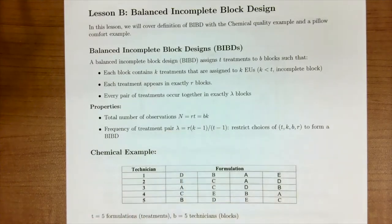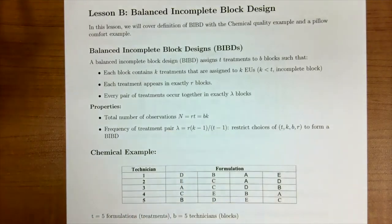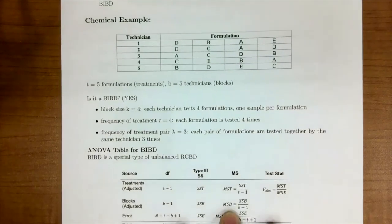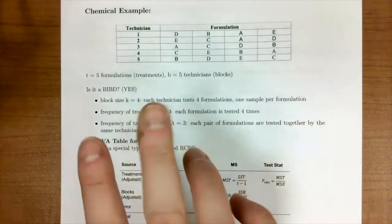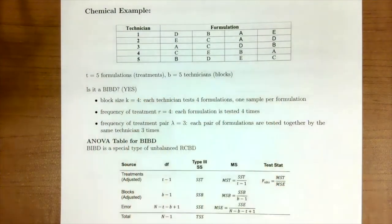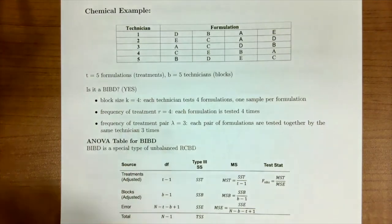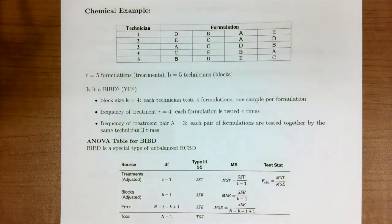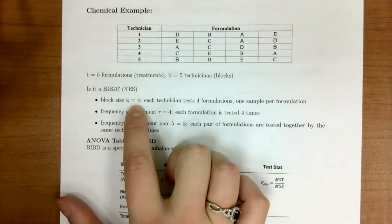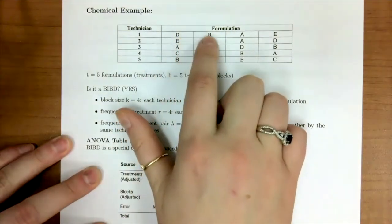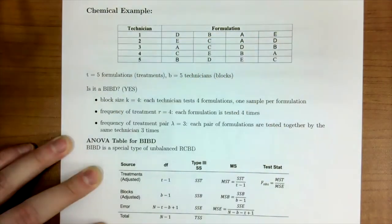So let's go back to our chemical example where we had T treatments or formulations and we had B equal to 5 for our technicians. Our technicians are our blocks and our formulations are our treatment. We're curious, is this a balanced incomplete block design? And I'm going to foreshadow and tell you it is. So our block size k is four because we have four treatments per one technician.